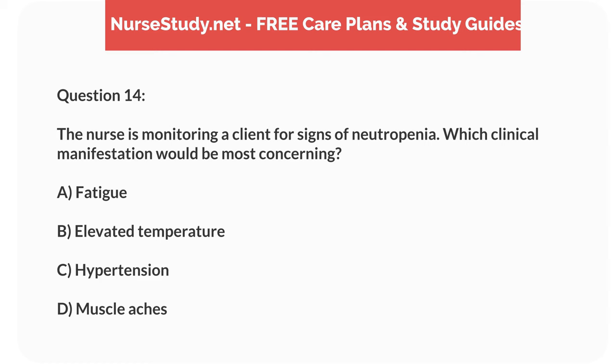Question 14. The nurse is monitoring a client for signs of neutropenia. Which clinical manifestation would be most concerning? A. Fatigue. B. Elevated temperature. C. Hypertension. D. Muscle aches.